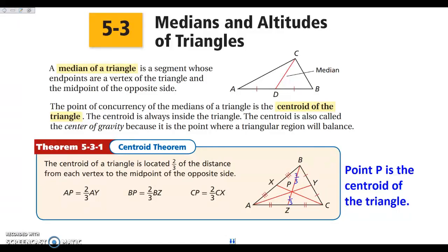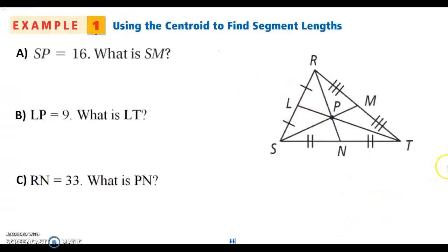One thing I want to focus on is that if I know this length and this length, this one is going to be half of this one. Because when we look at the distance — BP being two-thirds — if we take two-thirds and divide it by two, we get one-third. So this piece from the centroid to the midpoint is going to be half the length of the centroid to the vertex. When we compare it to the entire median, it's a third of the whole median, and this is two-thirds of the whole median. We're going to do some examples with it in just a sec.